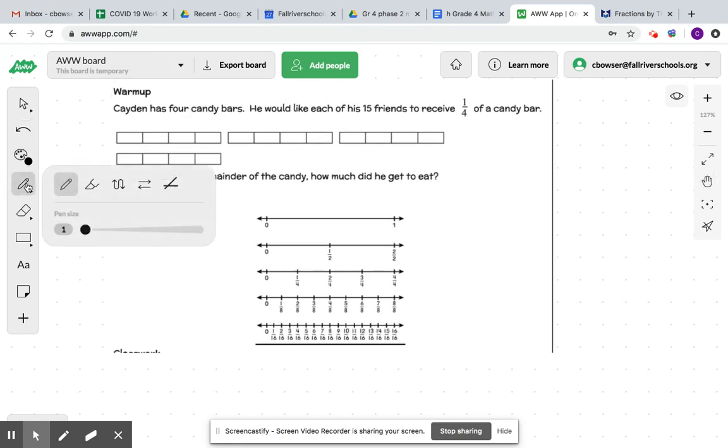I'm going to label each friend as one through 15. And I'm going to say friend one gets one-fourth, friend two, friend three, four, friend five, six, friend seven, friend eight, friend nine, friend 10, friend 11, friend 12, friend 13, friend 14, and then our final friend, friend number 15.